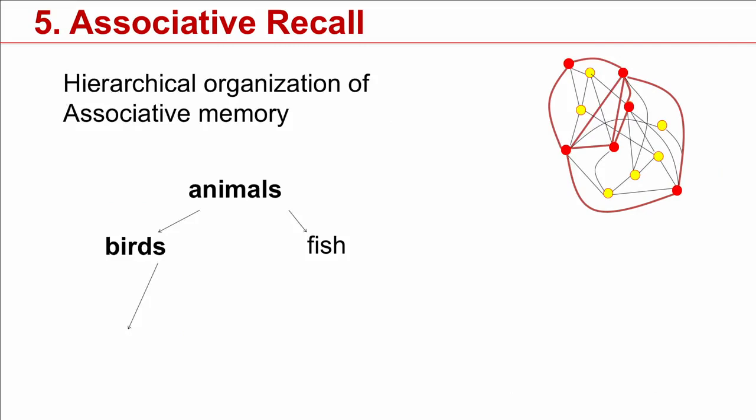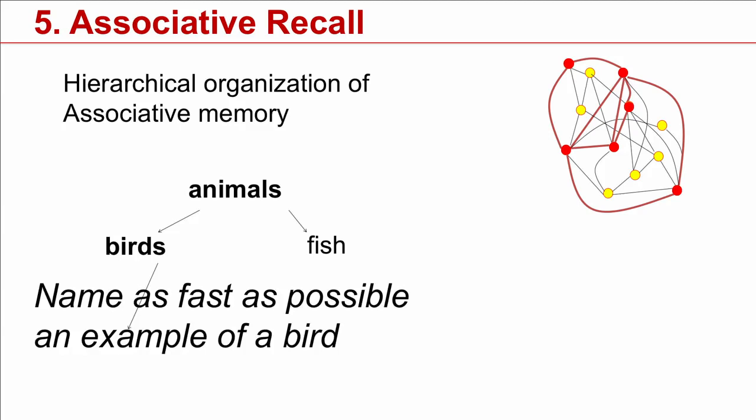There are also associations that go across different levels. For example, animals, you may associate birds or fish. If you think of birds, you may think of a specific example of a bird and say it's a swan or a goose or a raven or whatever you like.